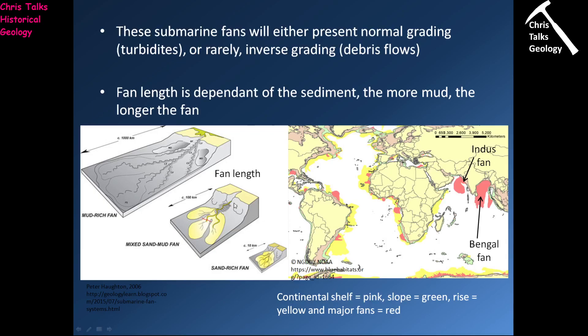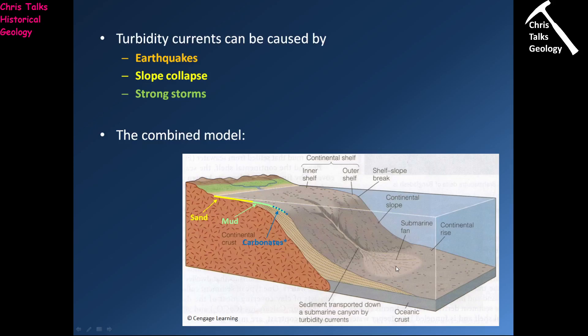We know we have these turbidity currents — we can see the Bouma sequences in the rock record, and we've also drilled cores through modern turbidite flows to see what they look like. The question then becomes what actually causes these turbidity flows. If your sediment is sitting happily on the continental shelf, why would it go down the continental slope? There are typically three main reasons which will trigger a turbidity current and cause material to come off the shelf and go down the slope.